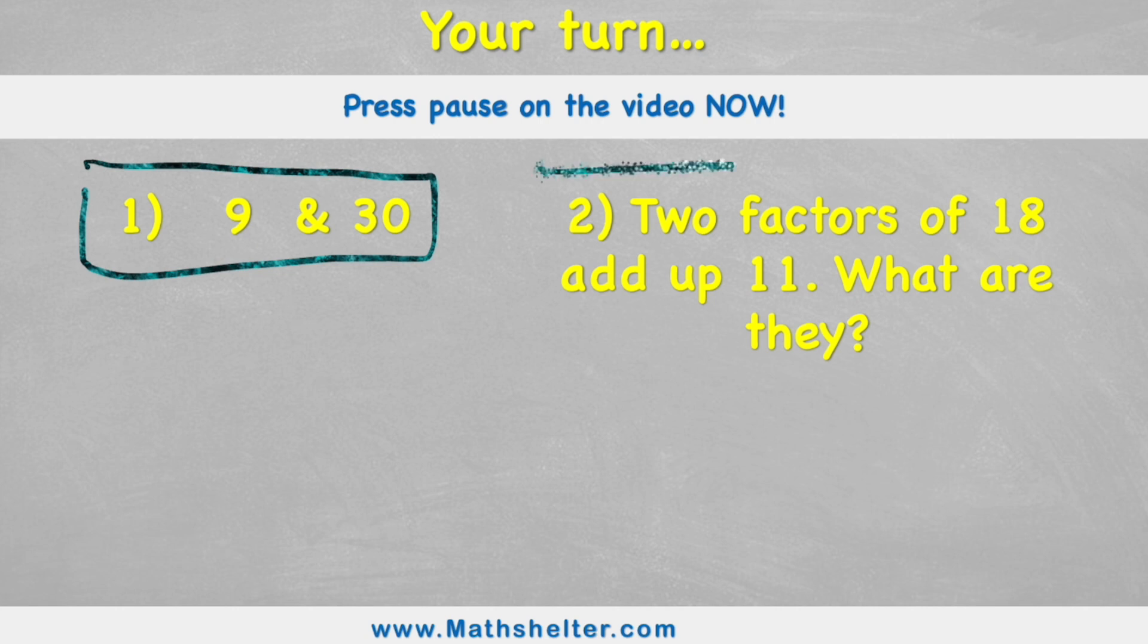Question two is a little bit different. It says two factors of 18 add up to 11. What are they? So you're going to have to find the factors of 18 and then find two of them that equal 11 when added together. Press pause the video, try and work these out, put your answer in the comment section. Good luck.